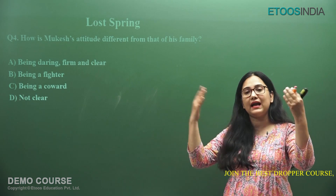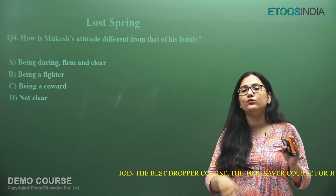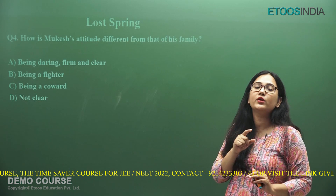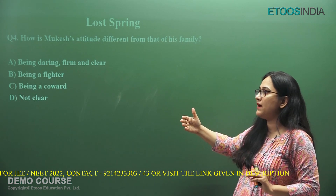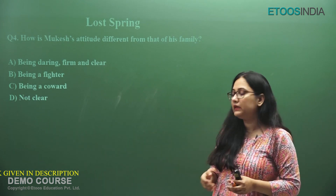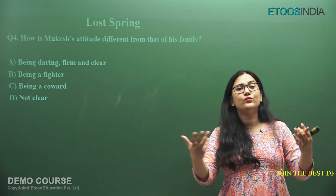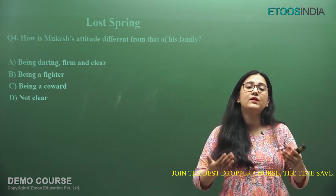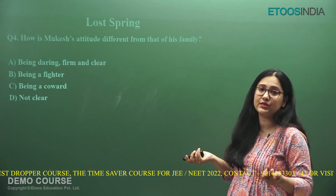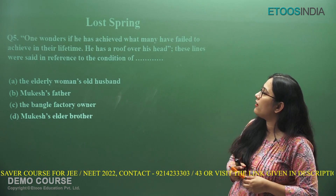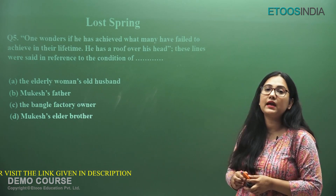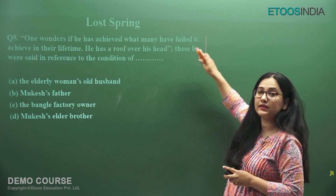Mukesh is daring, firm, and clear. He has the desire and gumption to do something different from his family. He has clarity about what he wants at such a young age. Regarding the lines 'One wonders if he has achieved what many have failed to achieve in their lifetime. He has a roof over his head' — these were said in reference to the elderly woman's old husband. This is a huge achievement for a bangle maker, as many others in the story have not been able to build a house in their lifetime.